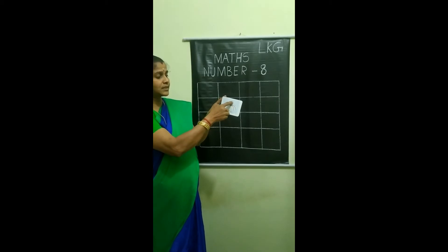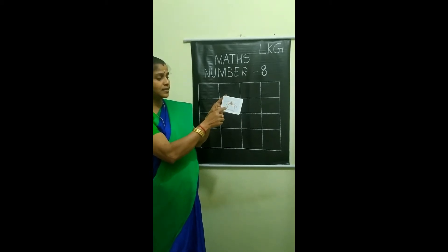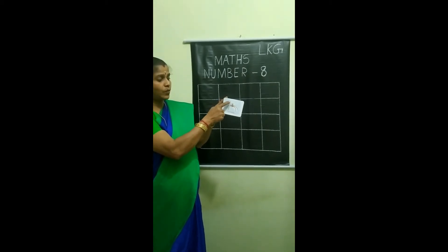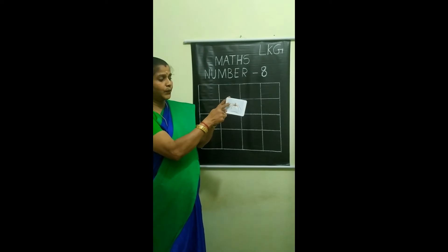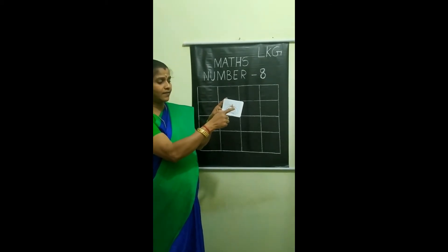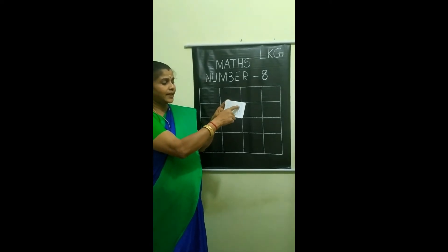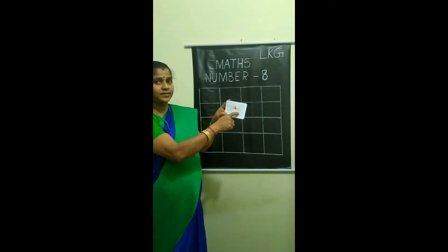How many legs does the spider have? Let's count: 1, 2, 3, 4, 5, 6, 7, 8. A spider has 8 legs.